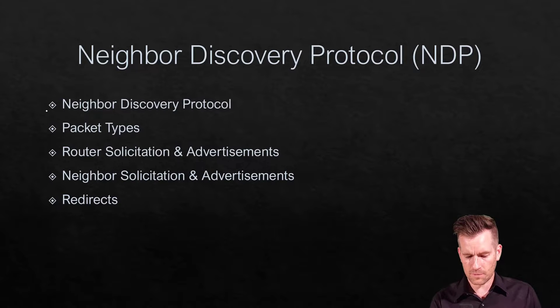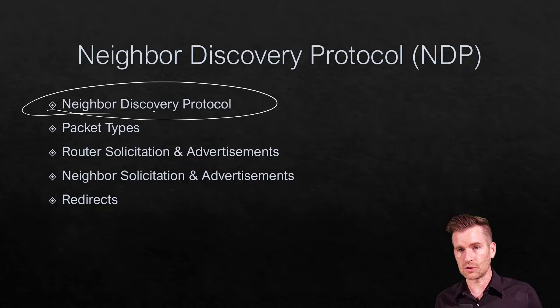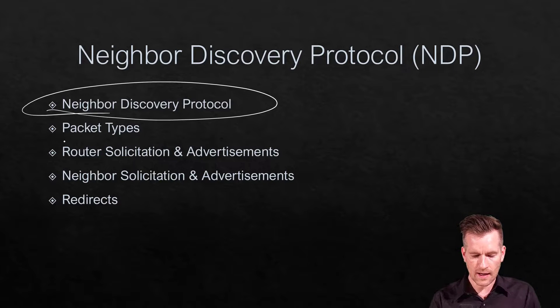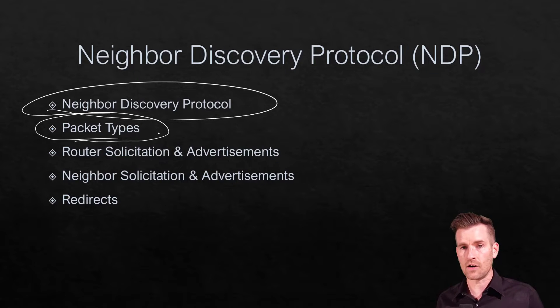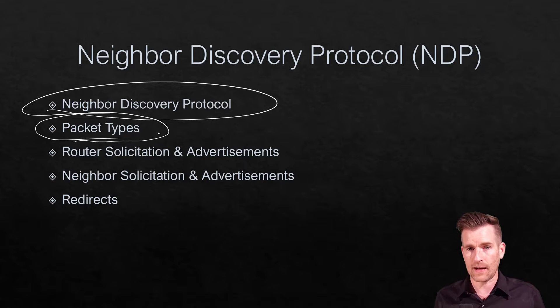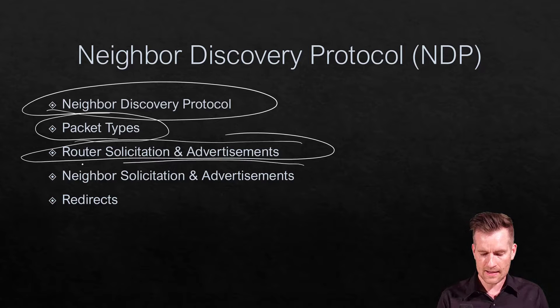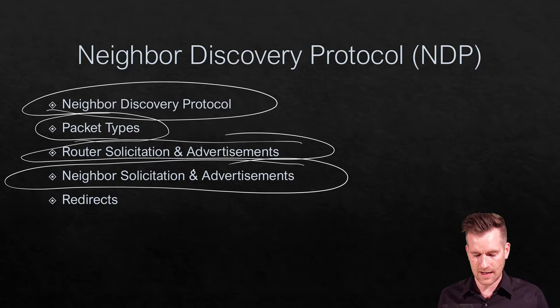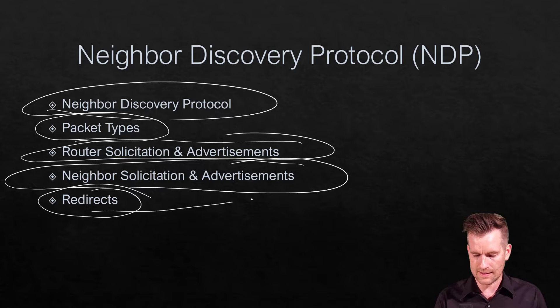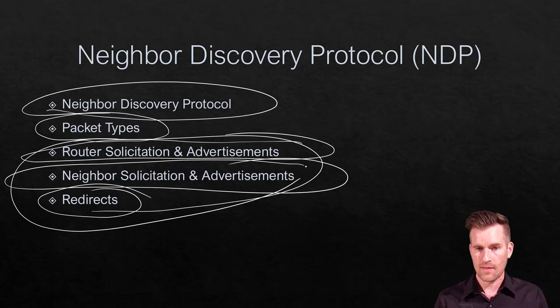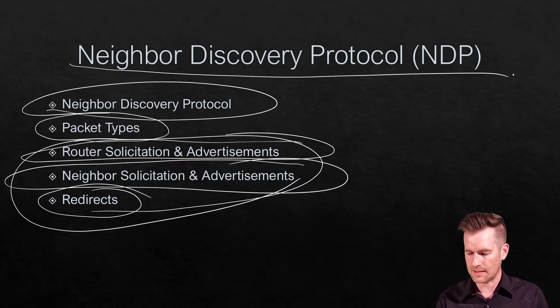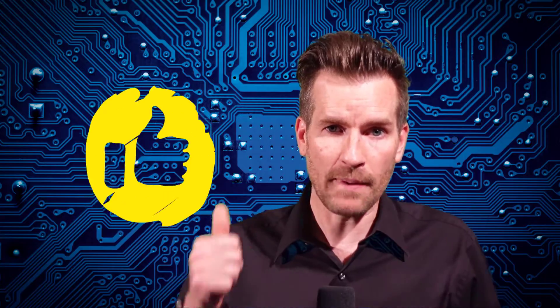So Neighbor Discovery Protocol — we talked about how it's crucial to IP version 6, some of the packet types associated with it, its two main functions with router solicitation and advertisement and neighbor solicitation and advertisement, and then we wrapped it up with redirects. These are the different packet types associated with Neighbor Discovery Protocol. Hope these videos are helping you out — if they are, can you help me out by hitting that like button?